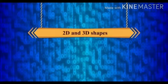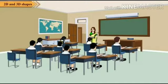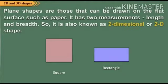Let's revise it first. Plane shapes are those that can be drawn on a plane piece of paper, on a piece of paper. It has two measurements: length and breadth. So it is also called a two-dimensional or 2D shape.